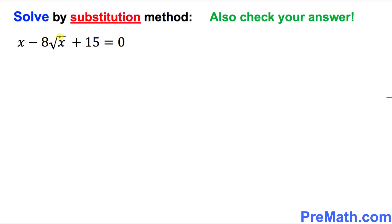In this method, wherever you see this square root or radical part of x, let's call u equal to that square root of x. The next thing is I want you to square both sides.